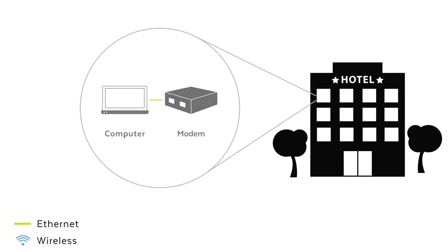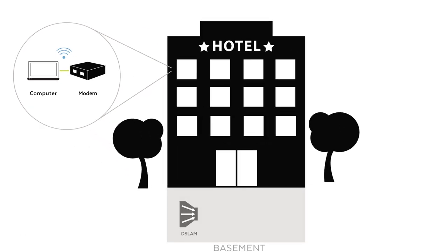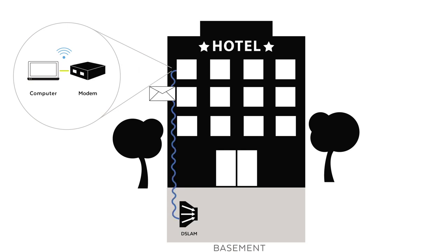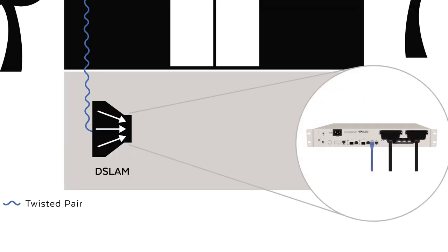When a hotel guest sends an email, they will transmit data from a computer to a wired or wireless modem. The modem will then use twisted pair to transmit the data to the DSLAM it is linked to. The DSLAM will then aggregate the data into a high-capacity uplink using data link layer technologies.